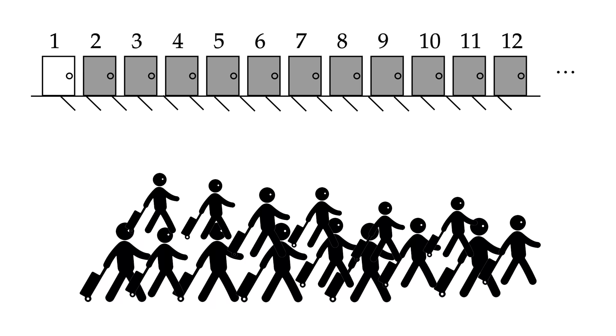If more guests arrive, let's say K guests, the hotel can still manage. They just repeat the process, but instead of moving everyone one room over, they move each person K rooms over. This way, everyone still has their own room, and there's space for the new guests.